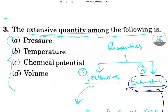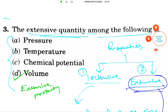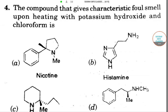From these options, volume is one of the extensive properties. So volume has an extensive property, and option D is the correct answer.